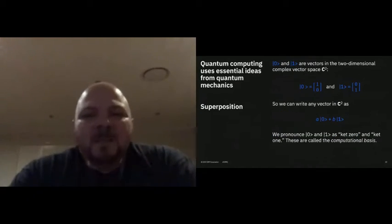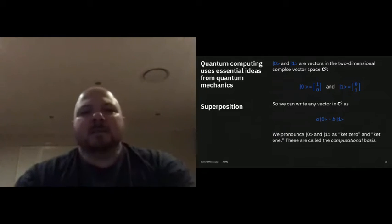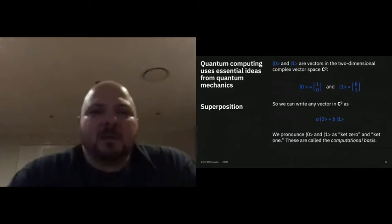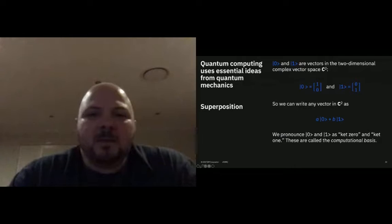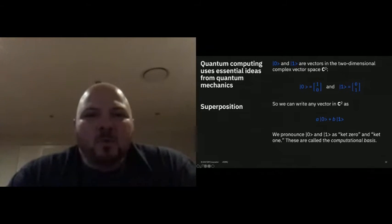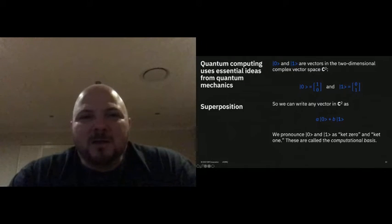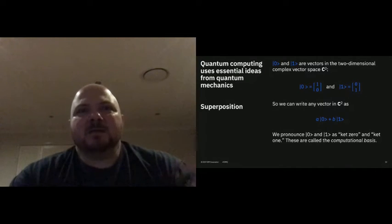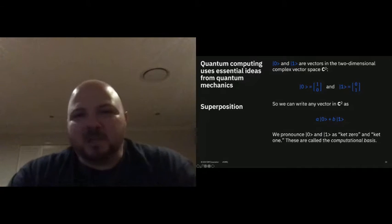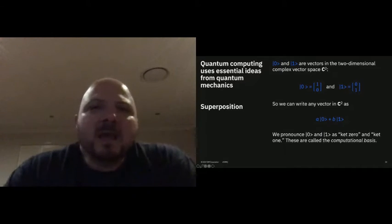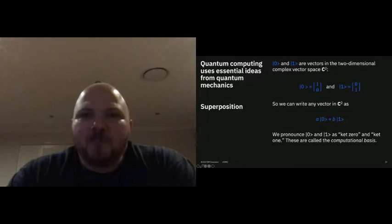Superposition — before we get into exactly what that is, just a little bit of maths and nomenclature. We have this thing called a ket, which is this notation with the line zero and a bracket. That's a zero ket or ket zero, which indicates a zero classically. Similarly, this is the one ket, which represents a one. This is in two-dimensional complex number space, and a lot of this stuff is represented as matrices.